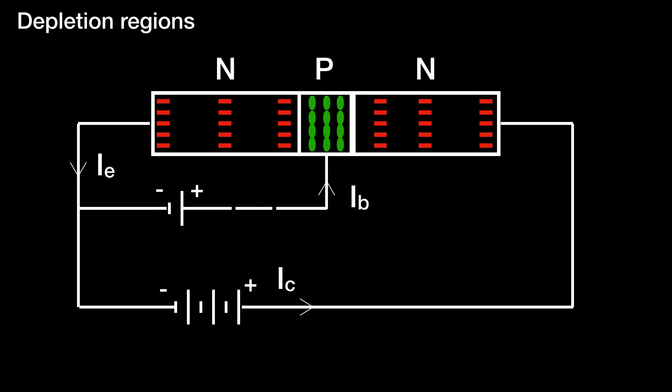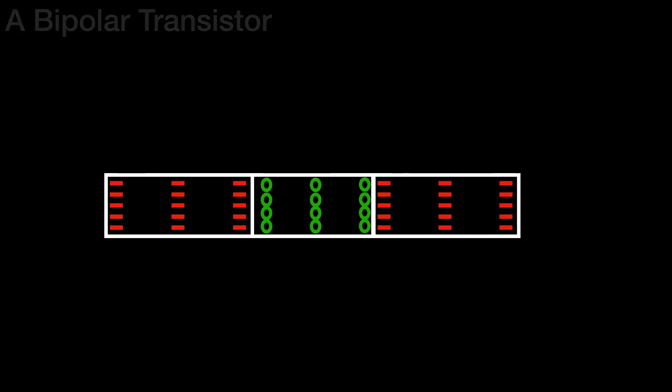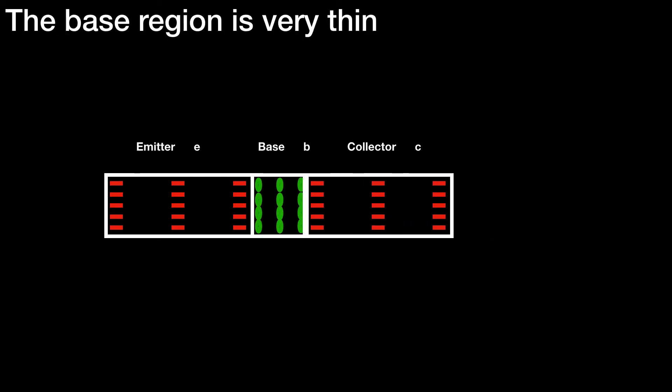We'll go through that again quite briefly. There's the bipolar transistor. We've said that the base region is very thin. There's the schematic symbol for an NPN transistor. If it was a PNP transistor, the arrow would point into the transistor. When NPN, it points out of the transistor—that's the arrow on the emitter leg of the schematic symbol.